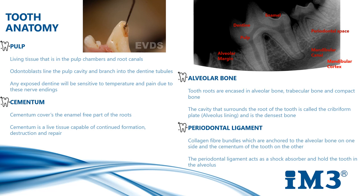The periodontal ligament is made up of collagen fibre bundles which are anchored to the alveolar bone on one side and the cementum of the tooth on the other. The periodontal ligament acts as a shock absorber and holds the tooth in the alveolus. The periodontal ligament contains nerves which transmit cold, heat, pressure and pain.